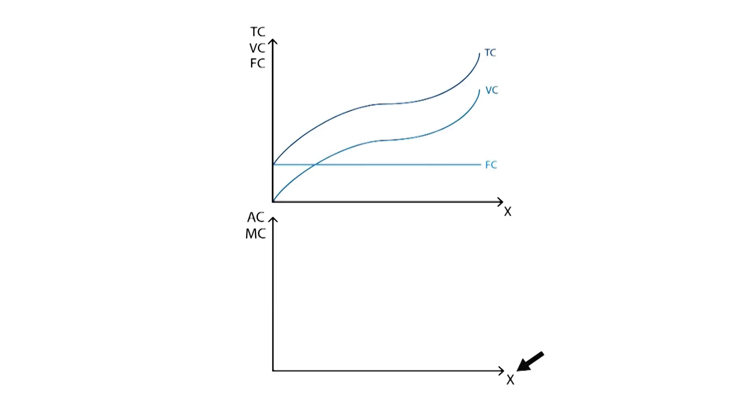The x-axis or horizontal axis measures output produced, while the y-axis or vertical axis shows average and marginal cost.